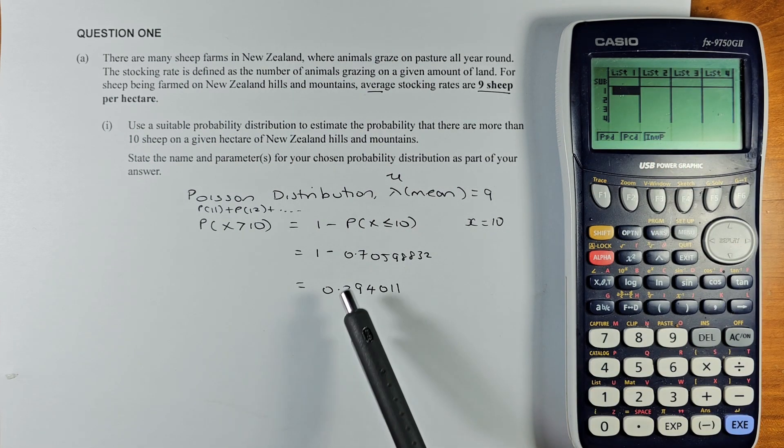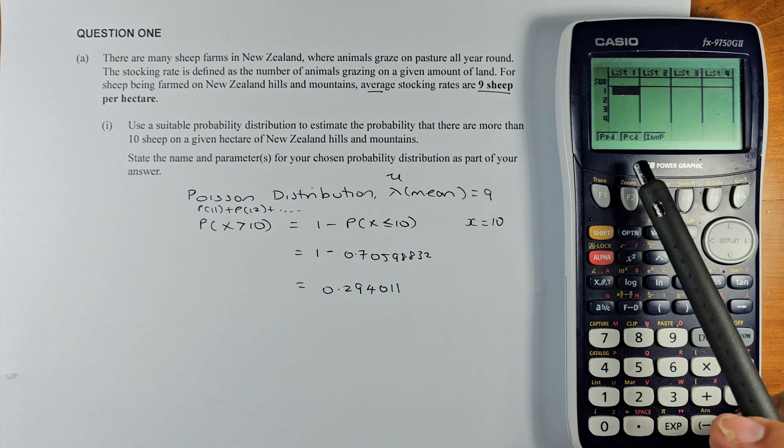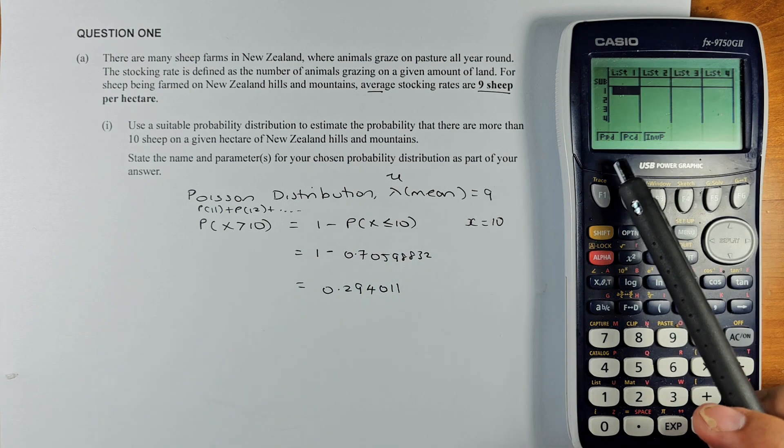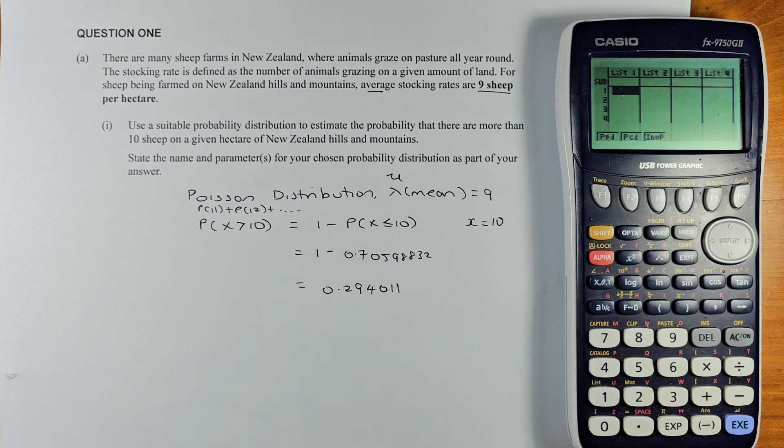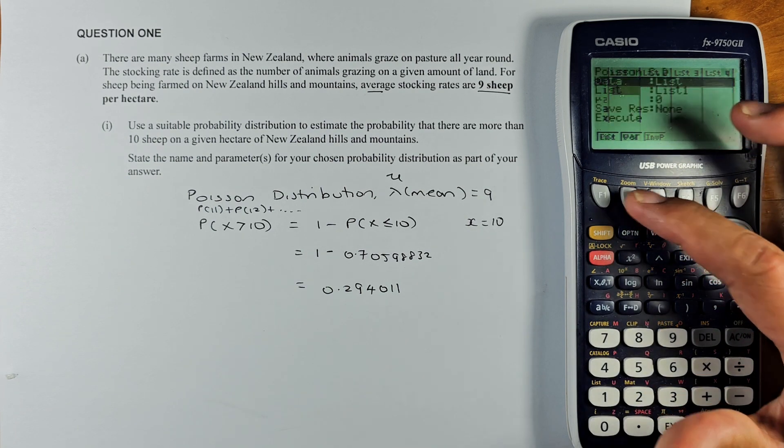Because we are doing a cumulative from 0 to 10, you have to use PCD. PPD represents point, PCD represents cumulative. So we're going to do PCD. We're going to key in F2, okay.